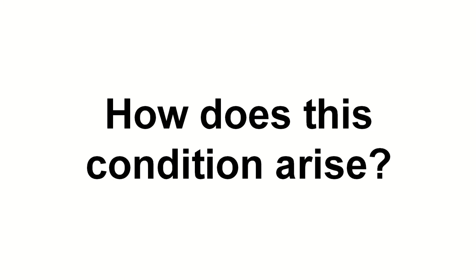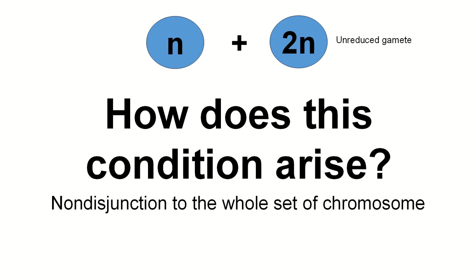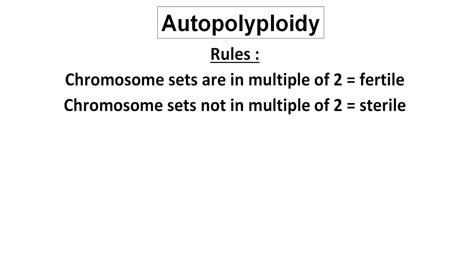So how does this condition arise? How can an individual carry an extra set of chromosomes? That individual must be developed from the union of one normal gamete and one unreduced gamete, although it can also be between two unreduced gametes. The unreduced gamete comes about because of non-disjunction of the whole sets of chromosomes — the whole set fails to separate during gametogenesis. The rule to remember: if the chromosome sets are in multiples of two, the individual will be fertile; if not in multiples of two, the individual will be sterile or infertile.